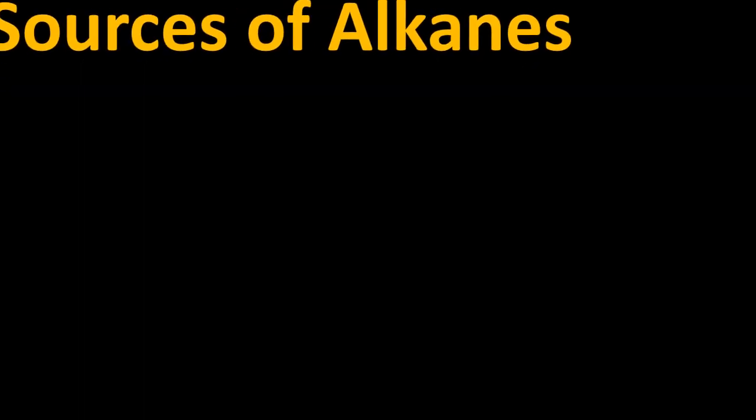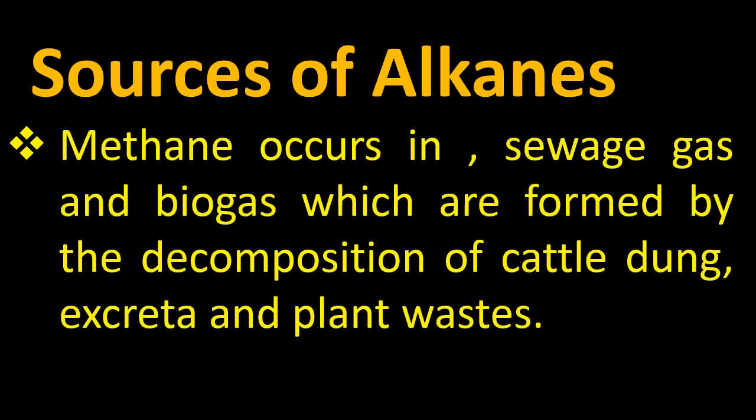Methane is also found in biogas. Biogas is a mixture of gases produced by the breakdown of organic matter in the absence of oxygen, primarily consisting of methane and carbon dioxide. It can be produced from raw materials such as agricultural waste, plant material, and sewage. In other words, methane occurs in sewage gas and biogas, which are formed by the decomposition of cattle dung, excreta, and plant waste.